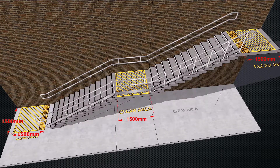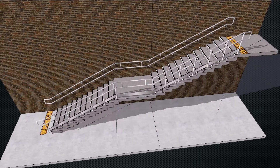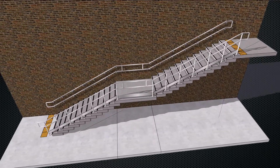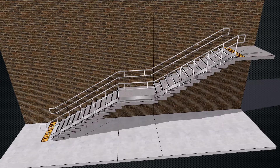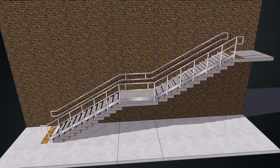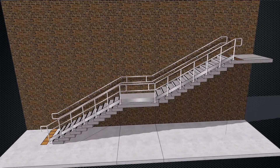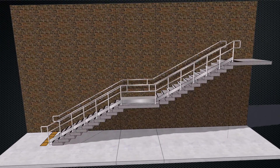Here is a quick recap. There should be no more than 12 steps in a flight of stairs. The dimensions of each step should be a maximum of 150mm tall. The tread depth should be at least 300mm, and the width of the whole step should not be less than 1500mm.